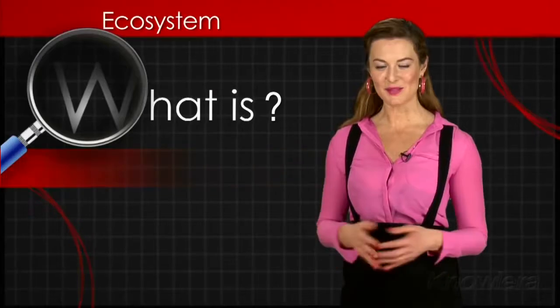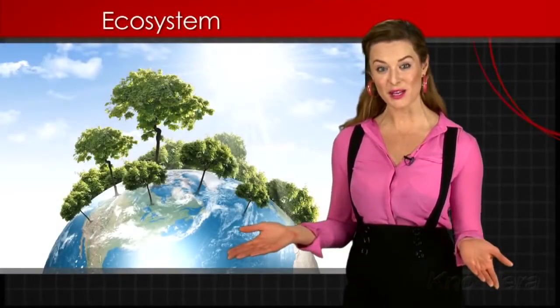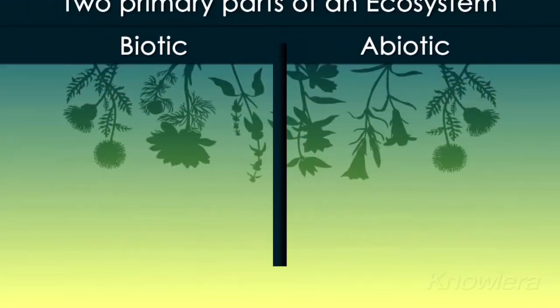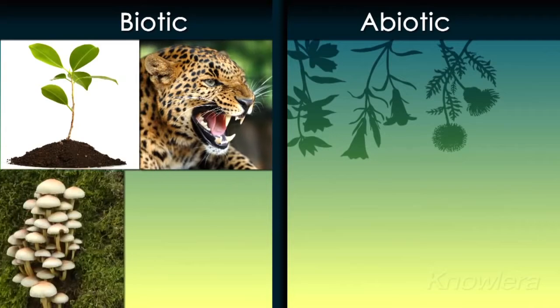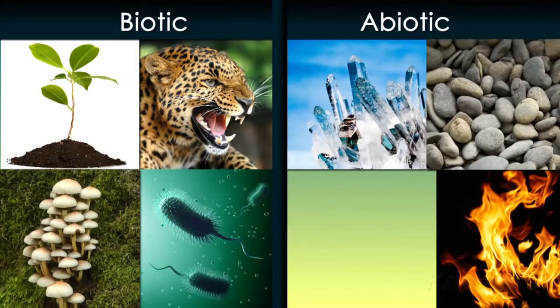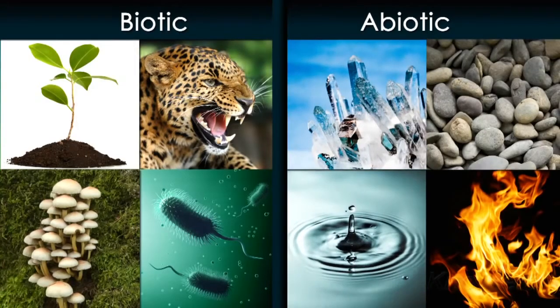An ecosystem is a community of living things interacting with the non-living parts of their environment. There are two primary parts of an ecosystem. The biotic part is made of all the living things, like plants and animals, fungi and bacteria and viruses. The abiotic part is made of non-living things, like rocks and minerals, water and energy.